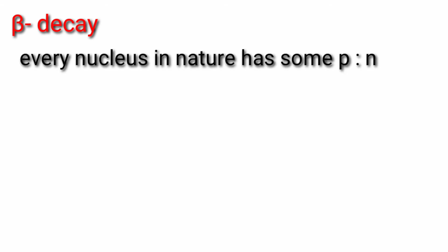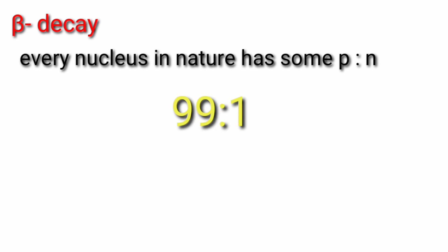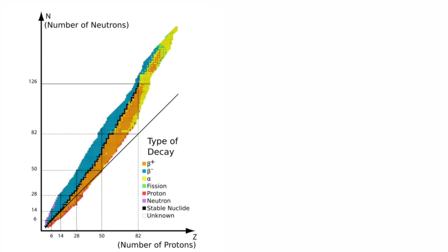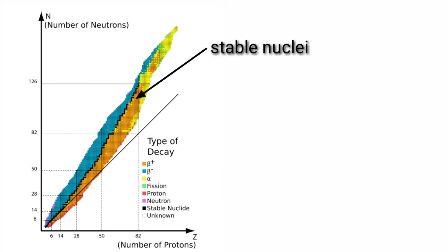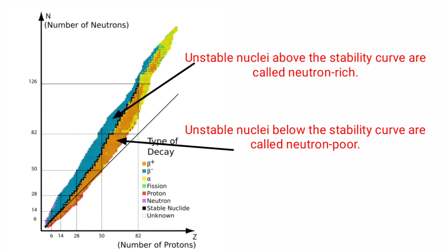Now why does beta decay occur? As we know, every nucleus has some proton-to-neutron ratio. If a nucleus has 100 nucleons with 99 protons and 1 neutron, that ratio is not possible for stability. The N-Z graph is a plot of the number of protons against the number of neutrons. The central line indicates stable nuclei where the number of protons equals neutrons. Above the stability curve are neutron-rich nuclei, and below it are neutron-poor nuclei where protons outnumber neutrons.